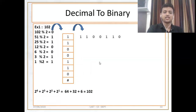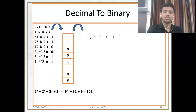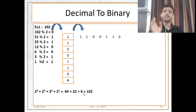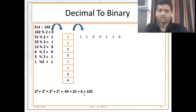Let's verify: 2 raised to 1, 2 raised to 2, 2 raised to 3, 2 raised to 4, 2 raised to 5, 2 raised to 6. So 4 elements are there: 2 raised to 6, 5, 2, and 1. Just find out the answer: 64 plus 32 plus 4 plus 2 becomes 102. This is how we verify our answer from decimal to binary conversion. I got my answer 102.